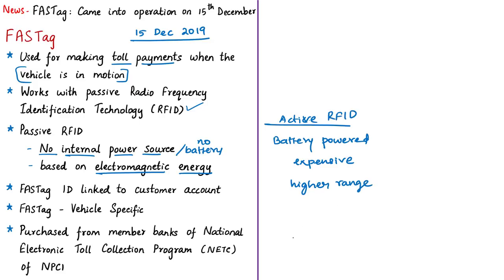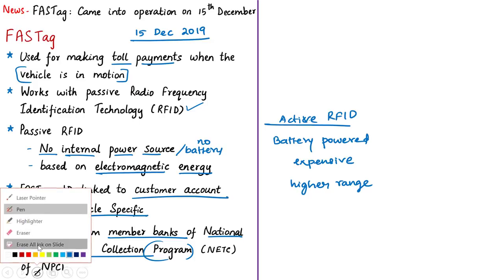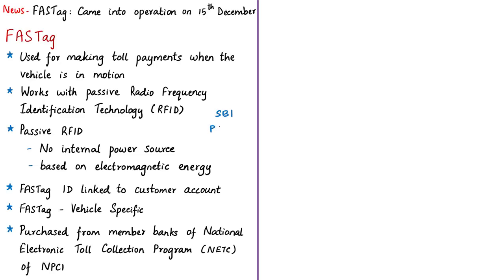If an account does not have enough balance to make a payment at a toll booth, the vehicle will be blacklisted and the person must manually pay. FASTag is vehicle-specific — once affixed, it cannot be transferred to another vehicle. It can be purchased from member banks of the National Electronic Toll Collection (NETC) Program, such as SBI, Paytm Payments Bank, Airtel Payments Bank, and other designated member banks. NETC Program is developed by the National Payments Corporation of India, which also manages IMPS infrastructure and the Unified Payments Interface (UPI). NETC offers an interoperable nationwide toll payment solution including clearing, payment settlement, and dispute management.